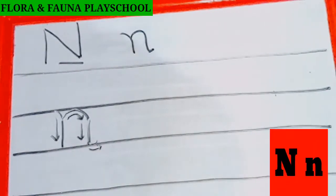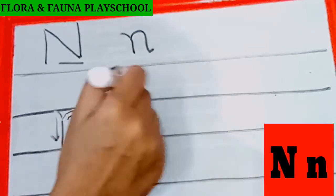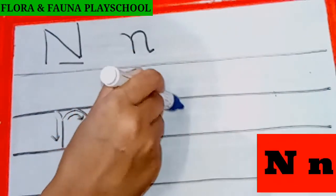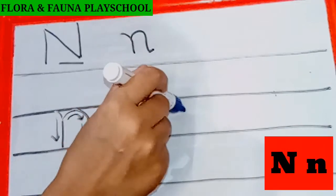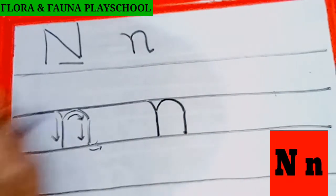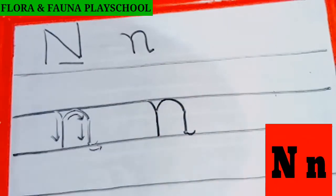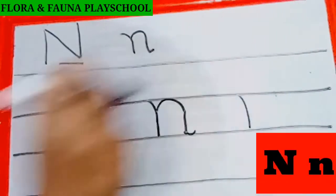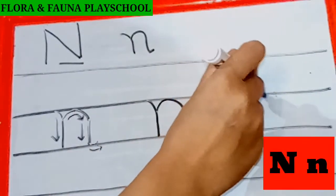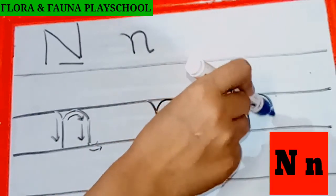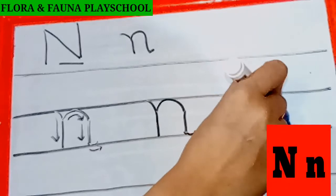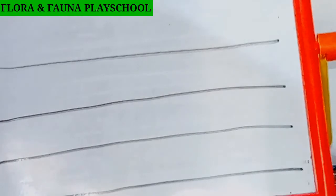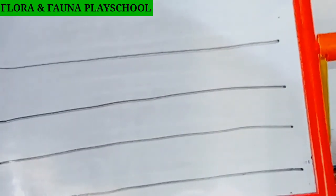Once more: standing line, a curve, a standing line, and a small curve in the forward direction. So this is how you write small letter N. Now we will see how to write small letter O.